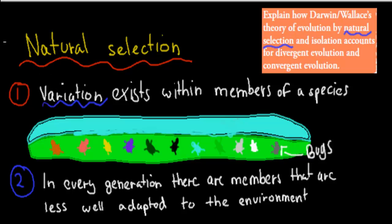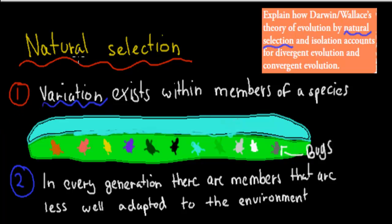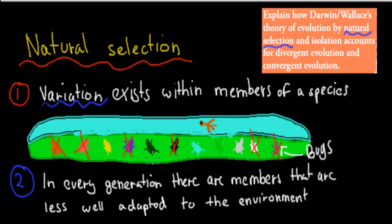But now we add a bird — a bird that hunts with really good eyesight, like a hawk. It can pinpoint these bugs even though they're very small. Thinking about the different color variations, the black one would be eaten pretty fast — easy to see on a green background — then the purple, orange, pink, white, grey, yellow, blue ones.